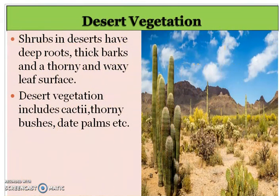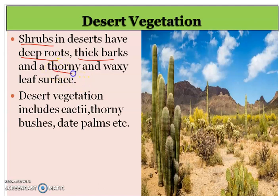Then we have desert vegetation. In deserts, we find shrubs. These shrubs have deep roots so they can absorb water from deep inside. Thick barks help them survive in extreme temperatures, and thorny and waxy leaf surfaces reduce transpiration. The most important shrubs found in the desert include cacti, thorny bushes, and date palms.